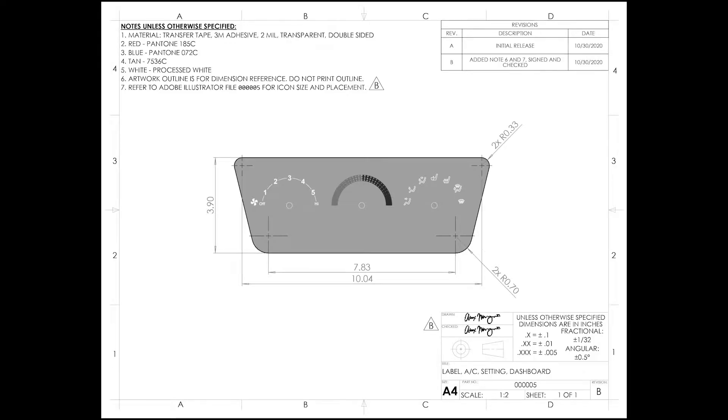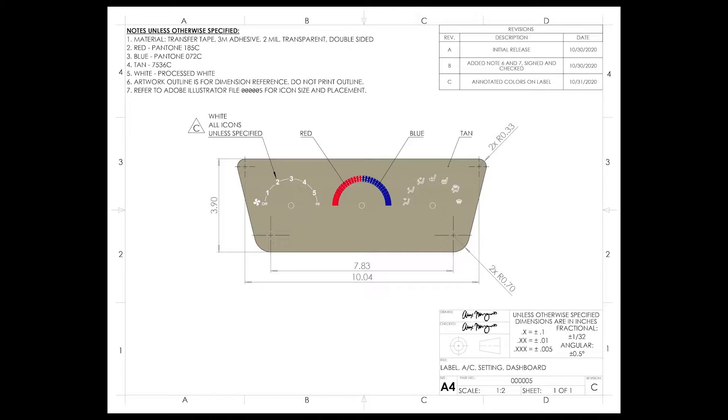During our investigation, we found that the root cause was that our purchasing department sent our supplier a grayscale, or black and white, drawing. The drawing did specify all the colors for the labels; however, it was difficult for the supplier to determine which color went where due to the grayscale. The correction is to send the supplier a colored drawing, updating our purchasing department and relevant document control representatives.